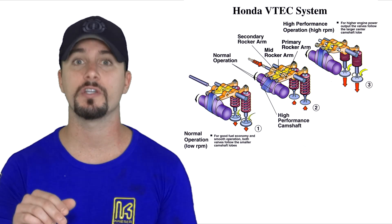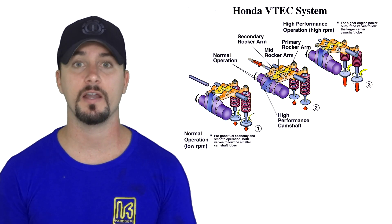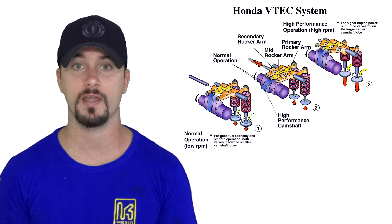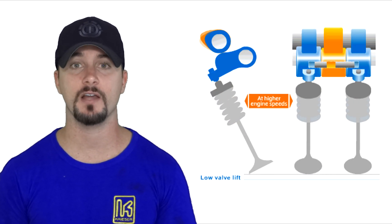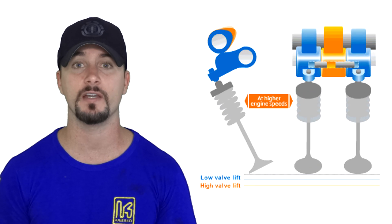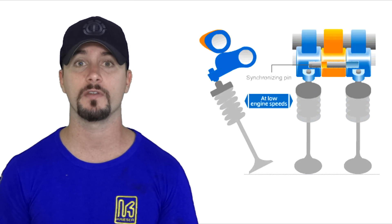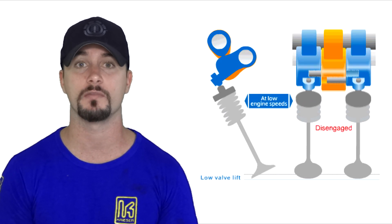Once your vehicle drops below 4500 RPMs, the synchronizing piston releases from the three rocker arms, allowing only the primary and secondary rocker arms to be engaged.